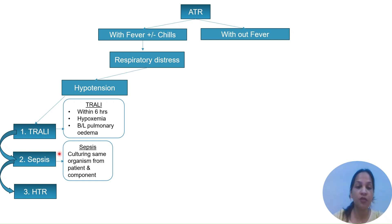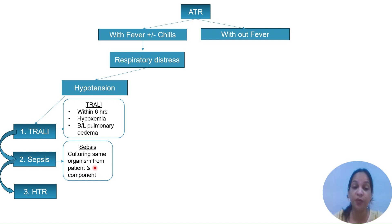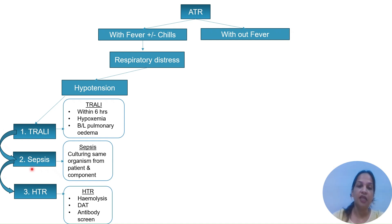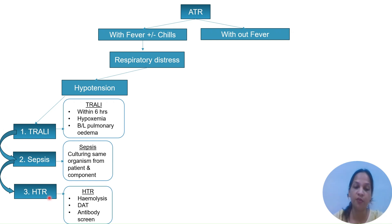If there is no bilateral pulmonary edema but the culture of the patient and the component culture shows the same organism, and there is a rapid onset of reaction, then it will be sepsis. If there is a respiratory problem and hypotension, and both the bag and patient sample show signs of hemolysis, and the direct antiglobulin test and antibody screen are positive, then it will be hemolytic transfusion reaction.